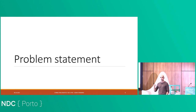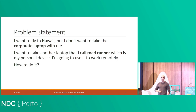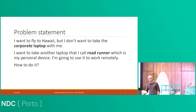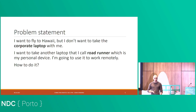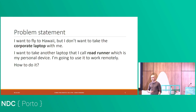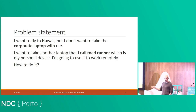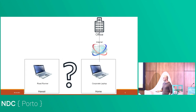The very first idea we want to tackle is: we'd like to fly to Hawaii, but we don't want to take our corporate laptop with us. Imagine you have a corporate machine — a laptop you typically take to your office or home. We want to leave it at home and fly away, and still do some work while abroad. So instead of taking the corporate laptop, we will take our personal device, which we'll call Roadrunner — that could be a tablet, iPad, personal notebook, Mac OS, whatever you find.